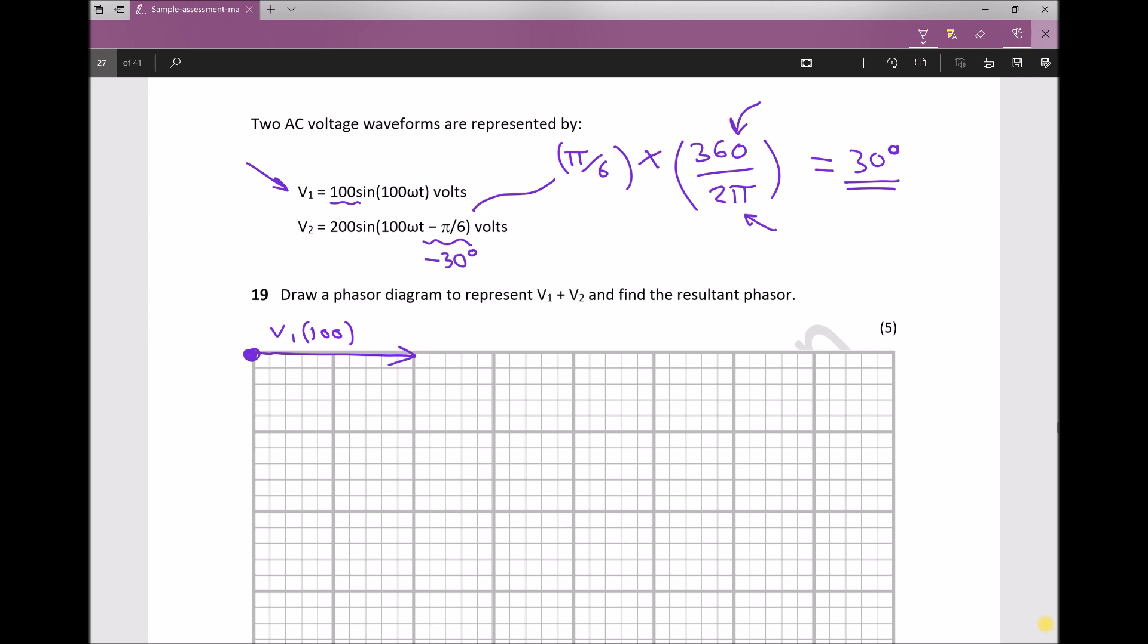V2 is twice that length, 200 long. It has a phase shift of minus 30 degrees, so we draw it below the horizontal at an angle of 30 degrees. This isn't to scale—I'm doing a sketch. This is V2, representing 200, and the angle is 30 degrees.